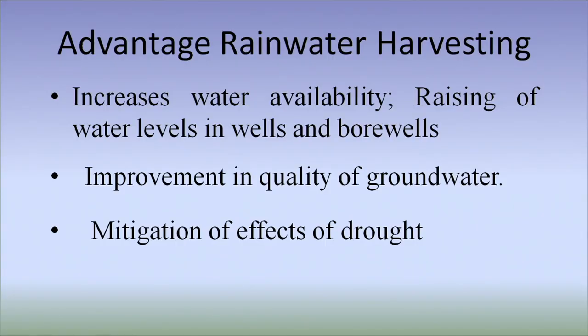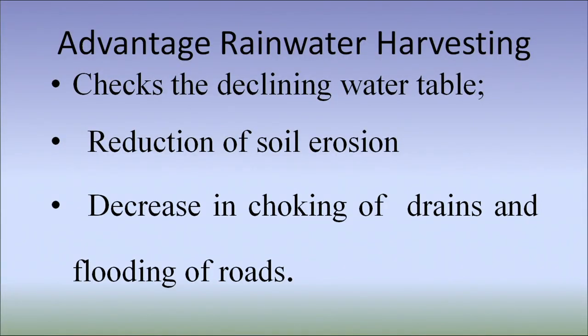Advantages of rainwater harvesting: it increases water availability, raises the water level in wells and bore wells, brings about improvement in quality of groundwater, and is very helpful in mitigating the effects of drought. Rainwater harvesting systems also check the declining water table, reduce soil erosion, and decrease choking of drains and flooding of roads.